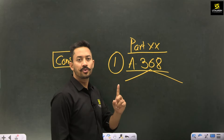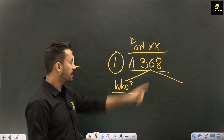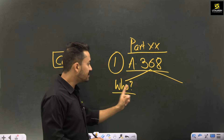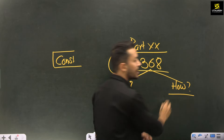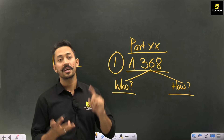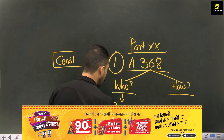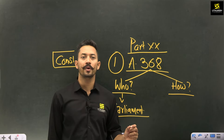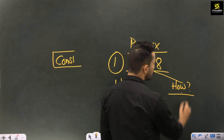Article 368 is a very famous article that talks about two things: first, who has the power to amend the Indian constitution, and second, how it can be done. The answer to the first question is Parliament — the Parliament of India has the power to amend the Indian constitution, and only the Parliament has this power.